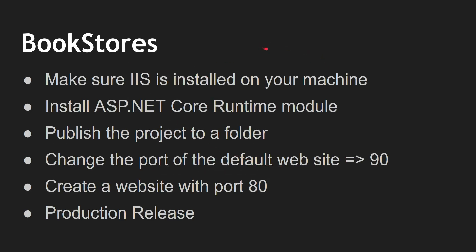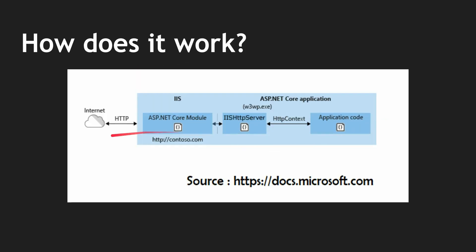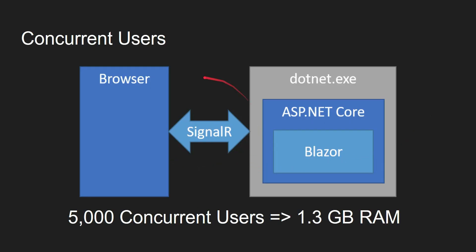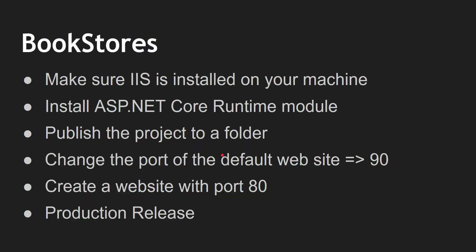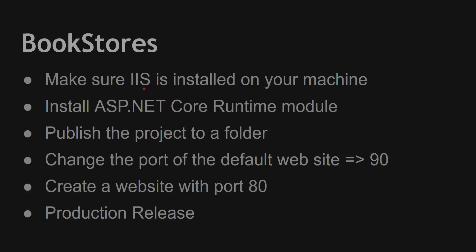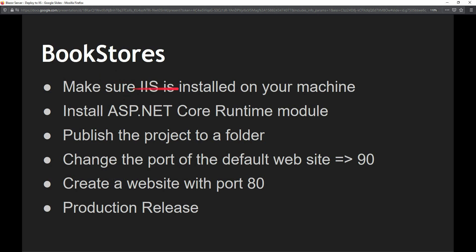Hey guys, in this episode I'm going to talk about how you can deploy your Blazor server application to IIS. Deploying a Blazor server application to IIS is just like deploying any other ASP.NET Core application to IIS. I've listed down the steps which work for me, so we'll follow these steps today and see if we can deploy our Bookstores application to IIS. Then I'm going to talk about how HTTP requests are handled in IIS for this ASP.NET Core application, and how you can scale up your Blazor server application, as the connection between client and server is maintained by a SignalR connection.